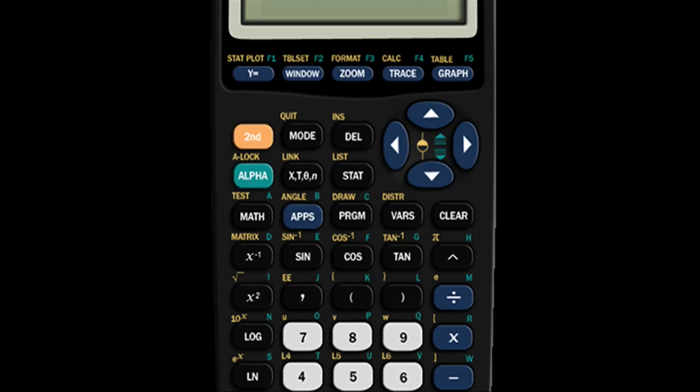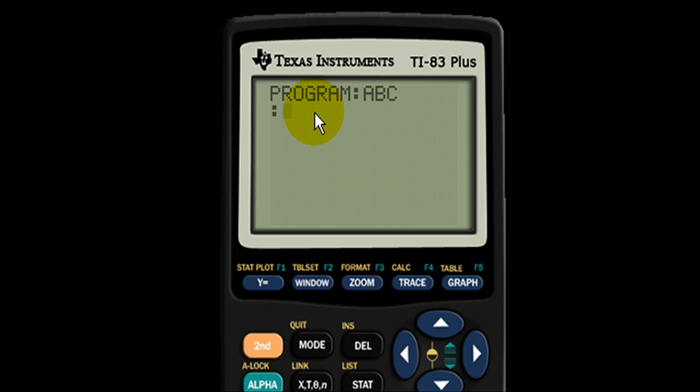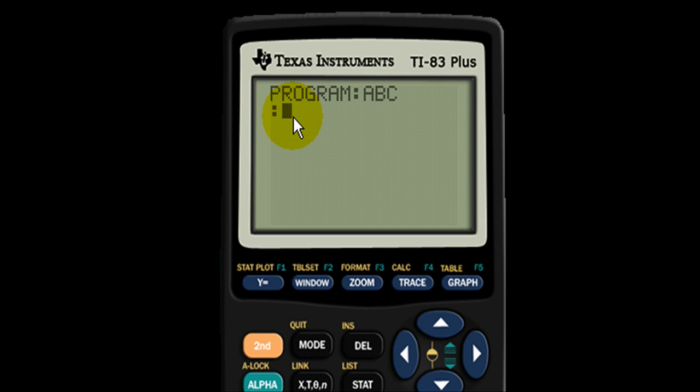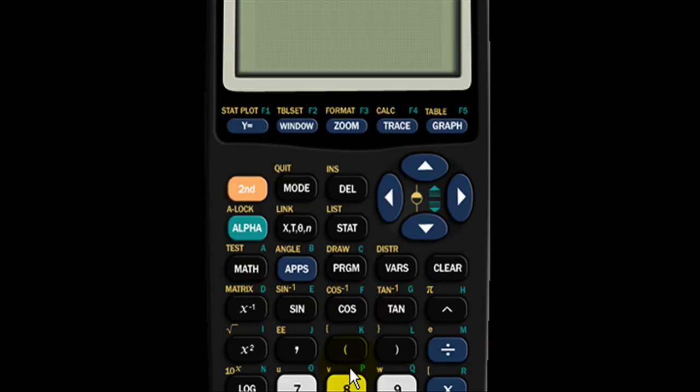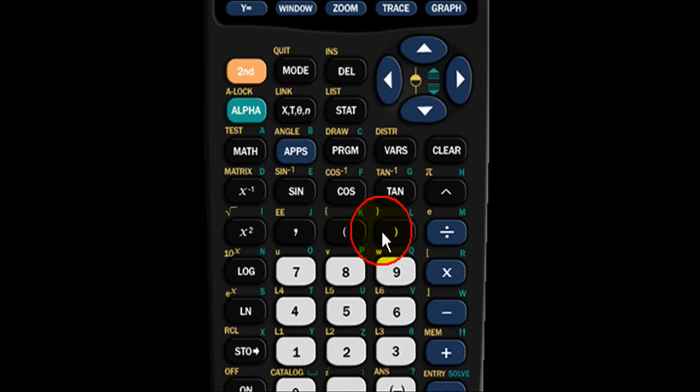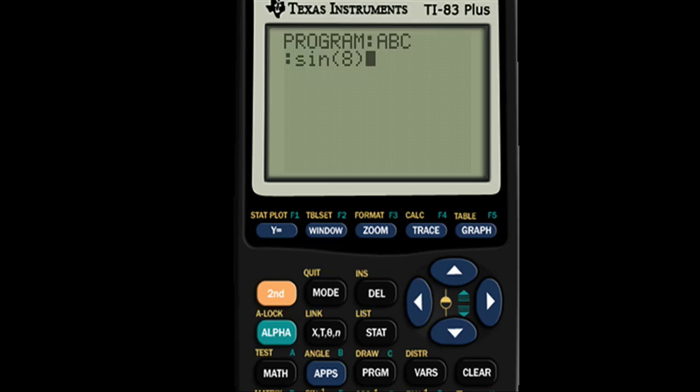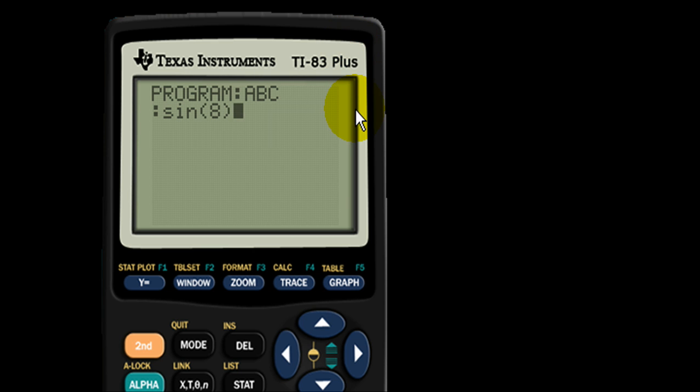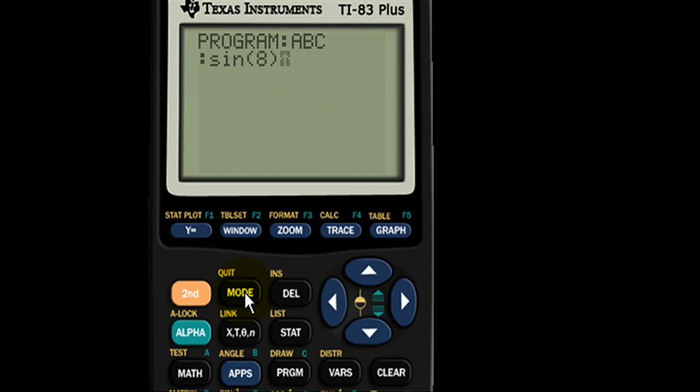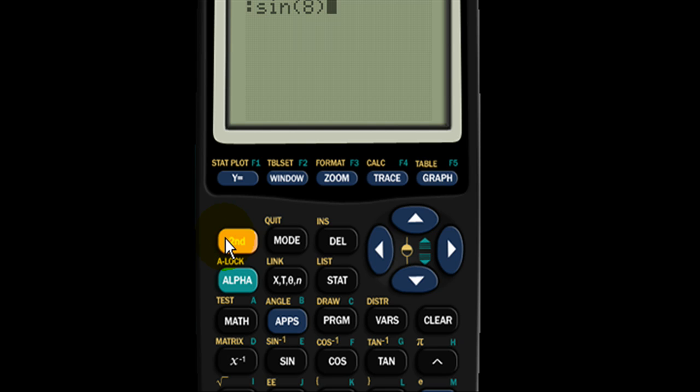So once you hit enter this shows up, it's a semicolon and a blinking cursor. So this is where you want to store your information. Let's say you want to know sine of eight is important to know because the quiz is about sine of eight. So let's say this is what I want to know and I'm not going to be given this on the quiz. So what I'm going to do is go to second quit to quit out of this screen.